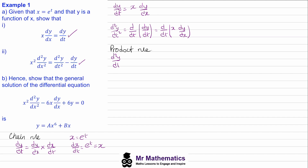We can differentiate this using the product rule. So d²y/dt² will equal the x term multiplied by the derivative of dy/dx with respect to t — using implicit differentiation, that gives x·d²y/dx²·(dx/dt) — plus the derivative of x with respect to t, which is dx/dt, multiplied by dy/dx. We can tidy this up: the dx's cancel, and we've already worked out dx/dt as x. So d²y/dt² equals x²·d²y/dx² plus dy/dx.